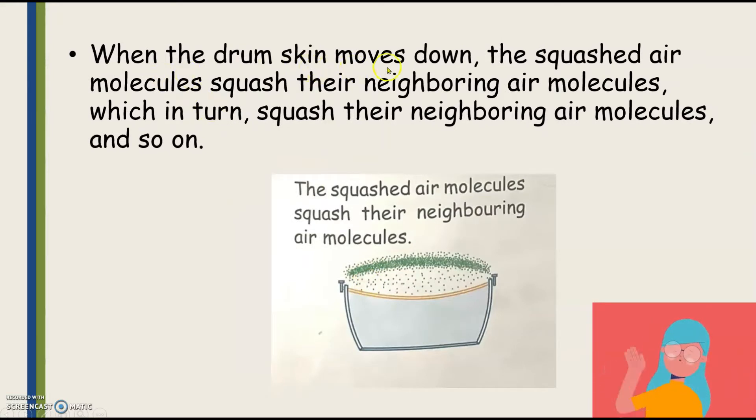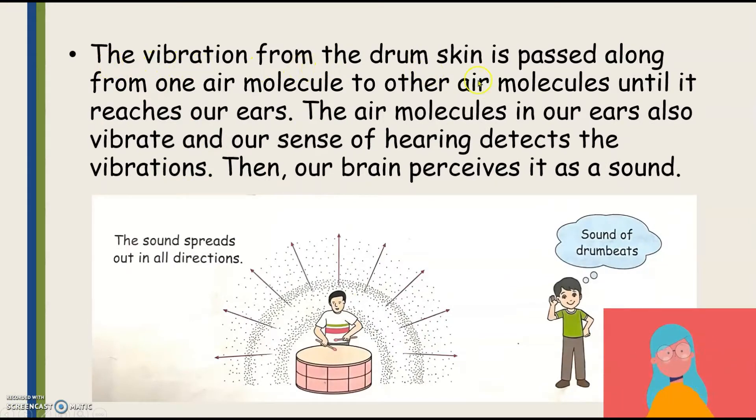When the drum skin moves down, the squashed air molecules squash their neighboring air molecules, and so on. The vibration from the drum skin is passed along from one air molecule to other air molecules until it reaches our ears. The air molecules in our ears also vibrate and our sense of hearing detects the vibrations. Then, our brain perceives it as a sound.